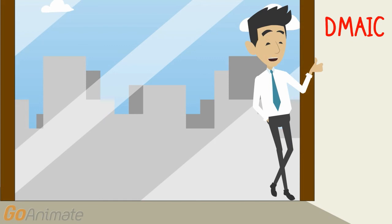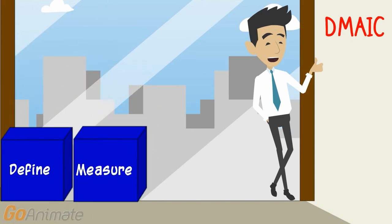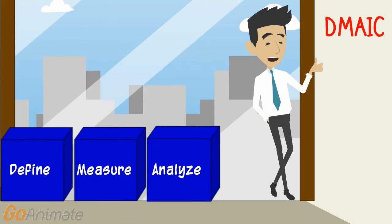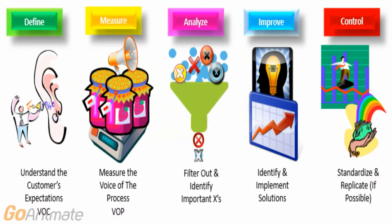DMAIC stands for Define, Measure, Analyze, Improve, and Control. The Define phase is about understanding the customer's expectations and starting the project. In the Measure phase, we measure the voice of the process, VOP, at the Gemba.